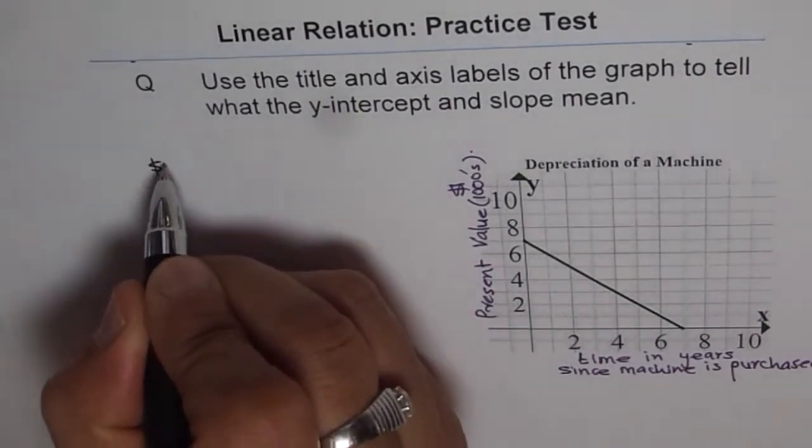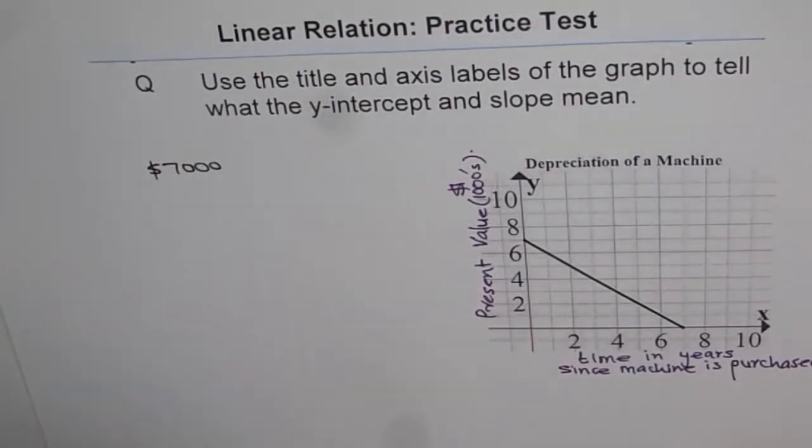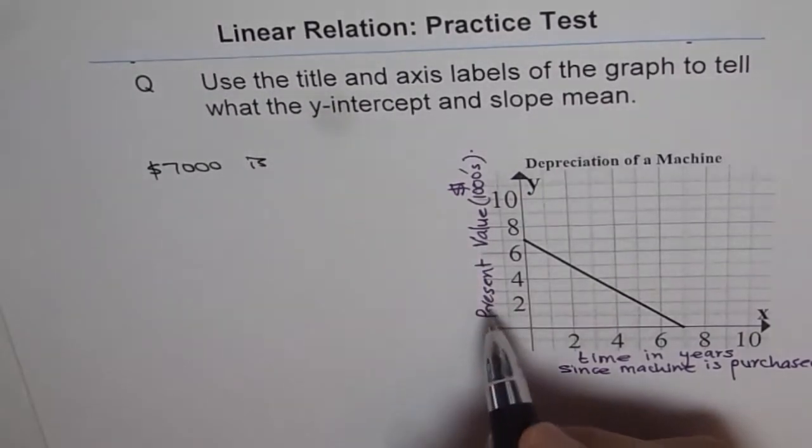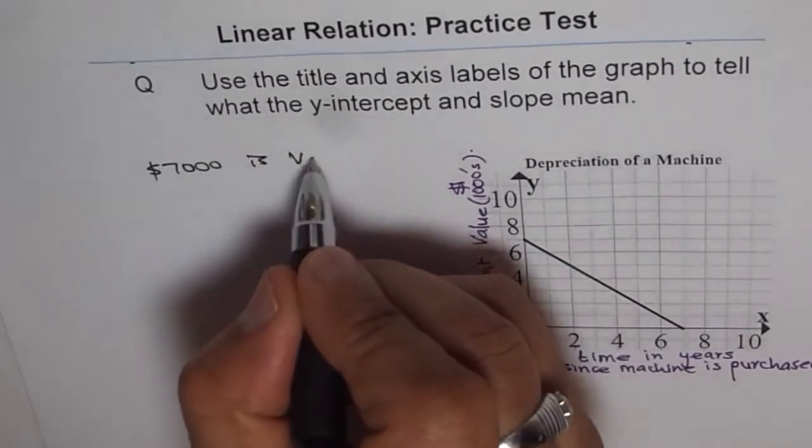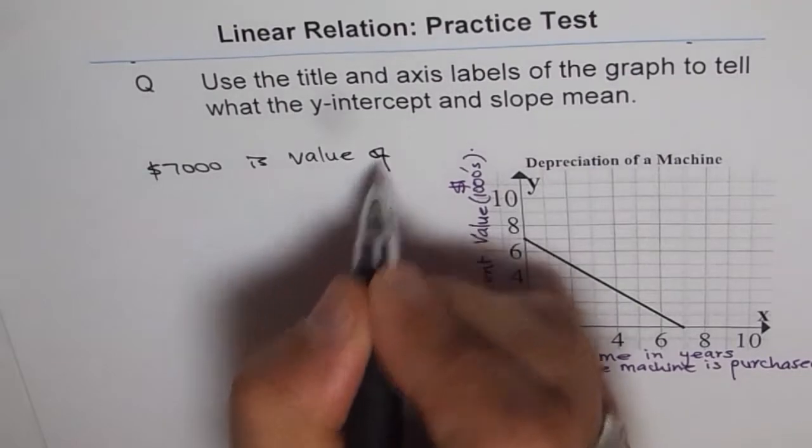So it says that $7,000 is the cost or value of new machine.